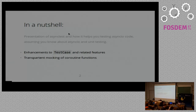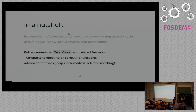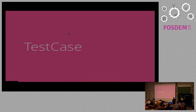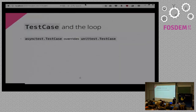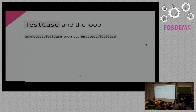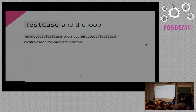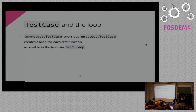I will show you how I implemented transparent mocking of coroutine functions, which is probably the most useful feature of AsyncTest, and I will show you a few advanced features as well. Let's start with a presentation of TestCase. AsyncTestCase is built on top of unit test case — it's just a class that extends the unit test version — and its main feature is that it handles loop creation and termination for each of your tests.